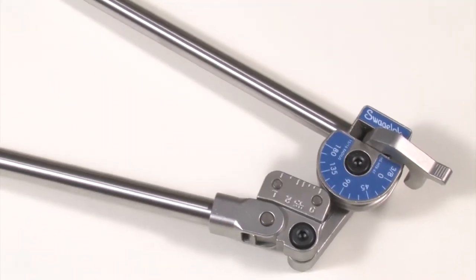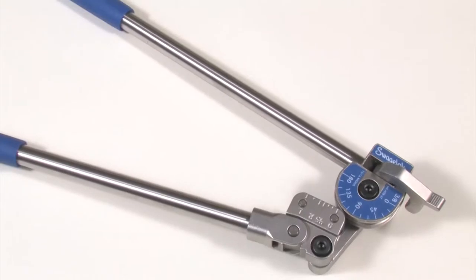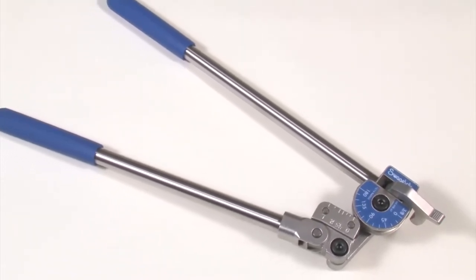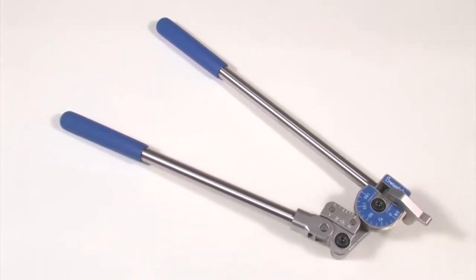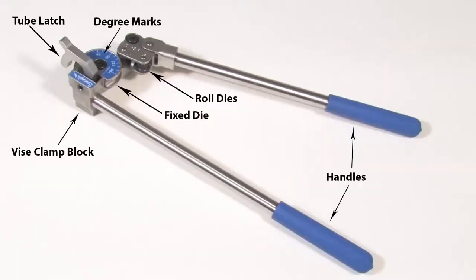Making bends in stainless steel CNG fuel lines can be done with a hand bender, since the lines are relatively small in diameter. These are the parts of a typical hand bender.